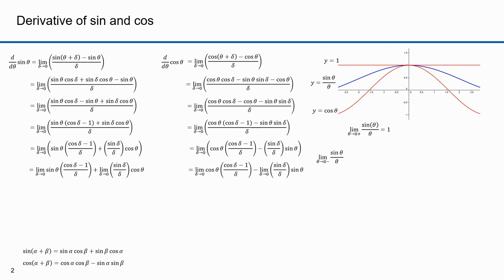The limit from the negative direction would do the same. Here I'm changing the sign of theta. This is the limit as theta approaches zero from the positive direction of sine of minus theta over minus theta. The sine function is an odd function, meaning that the sine of negative theta equals the negative sine of theta. That means sine of minus theta over minus theta equals minus sine theta over minus theta, and because negative over negative is positive, that equals sine theta over theta. That limit approaches one as theta approaches zero.